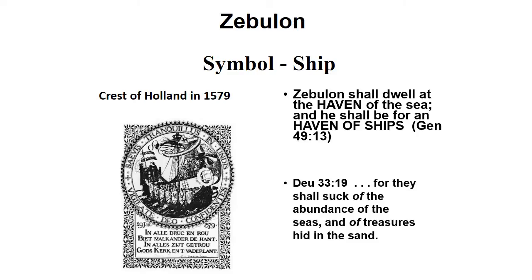The tribe of Zebulon's symbol was a ship. If you notice the crest of Holland in 1579, it has a ship on it. The scriptures say: 'Zebulon shall dwell by the haven of the sea, and he shall be for a haven of ships, for they shall suck the abundance of the sea and the treasures hid in the sands.'